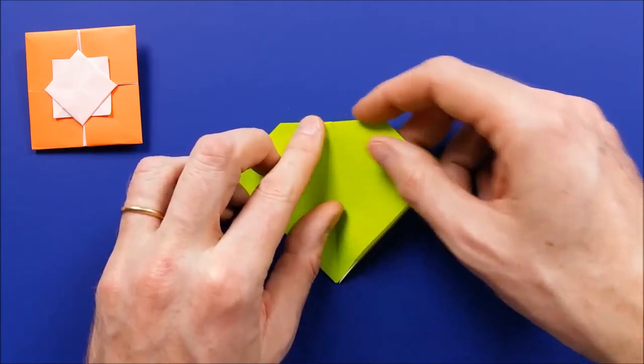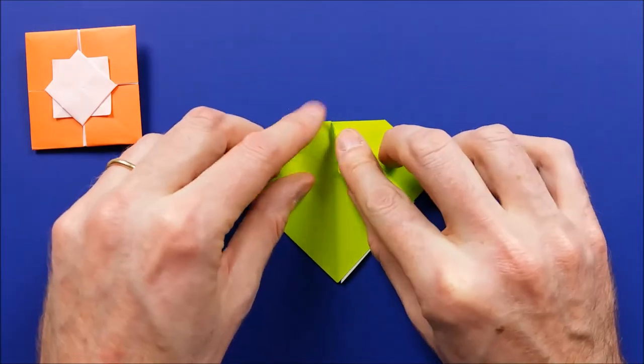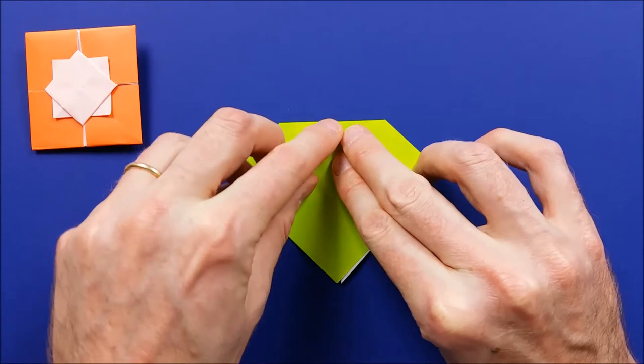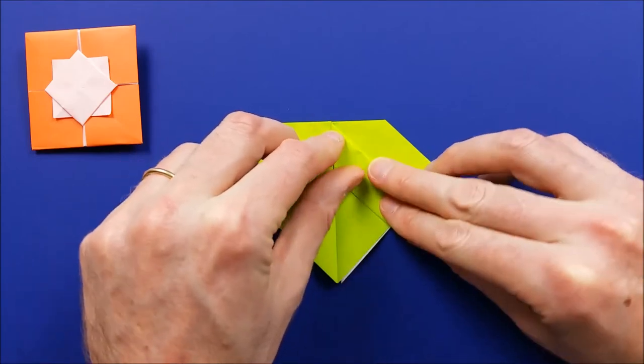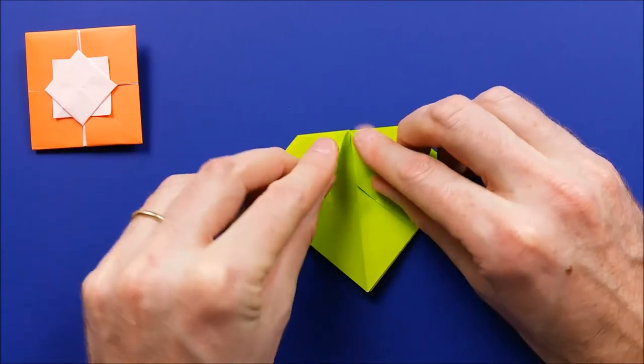And then bring this edge here to the vertical crease. Mark the fold. Repeat on the other side.